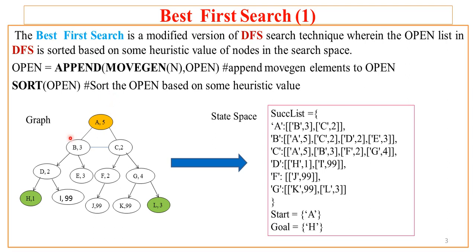Let us try to understand the graph on which we want to apply the best first search algorithm. The graph has nodes: A, B, C, D, E, F, G, H, I, J, K and L.